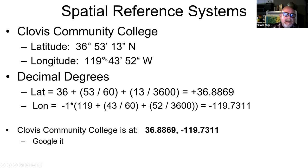Now for the longitude, we do the same thing. But because it is west, it's going to be a negative number. We can multiply it times negative one in this case so that we get a negative number. The negative is because it is west - east would be positive, west would be negative. If we calculate that out, this latitude and longitude becomes these decimal degrees: 36.8869 and the longitude would be negative 119.7311.